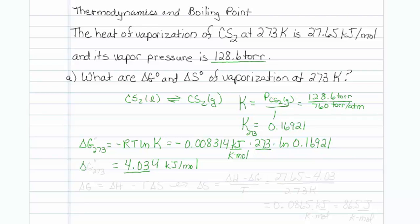That's how to find the free energy at standard states at 273 degrees. The way to find delta S is to use the formula delta G equals delta H minus T delta S, which can be rearranged to delta S equals delta H minus delta G over temperature.